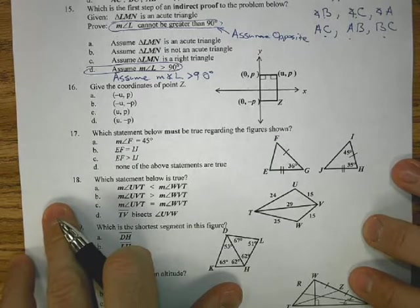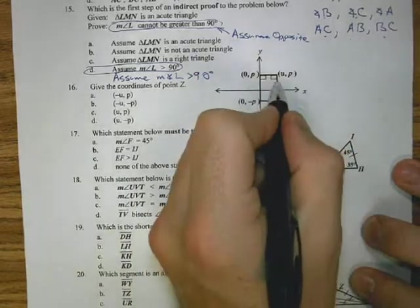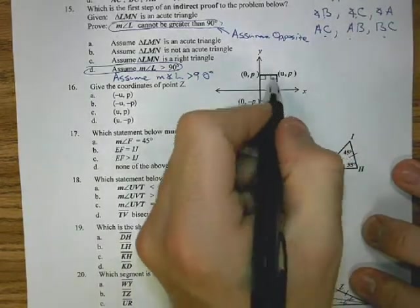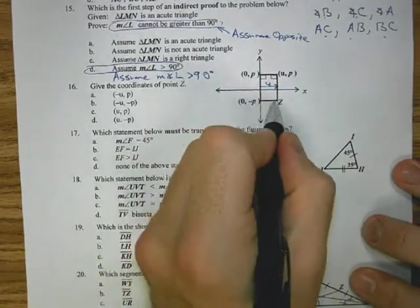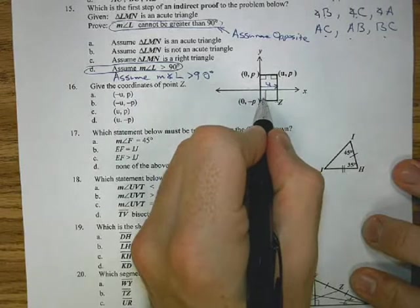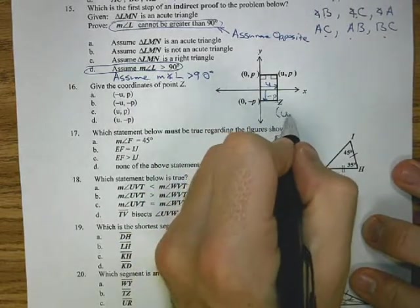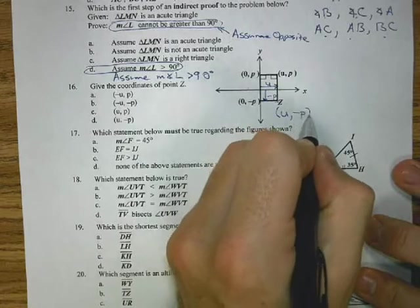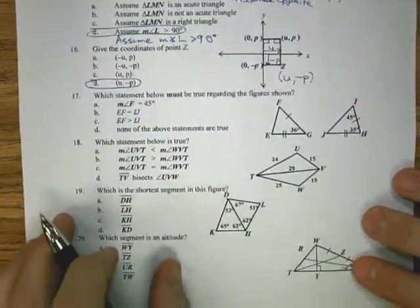For 16, we're looking at a coordinate proof. We need to find the coordinates for point Z. If I look at how I got to Z, really this line out here, I went out U units to the right, and then to get down to this line, I went down negative P units. So to get to Z, I'm going to go U to the right, negative P down, which gives you my coordinates for D.